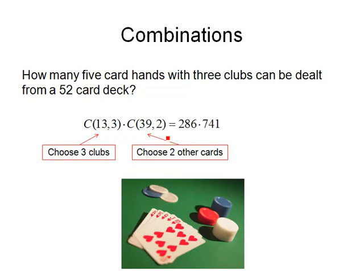When I work those numbers out, the number of ways to get 3 clubs from 13 is 286, and the number of ways to get 2 other non-club cards is 741. Multiplying those together gives 211,926 ways to get 3 clubs in a 5-card hand.